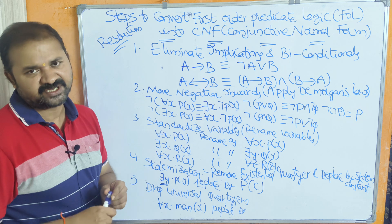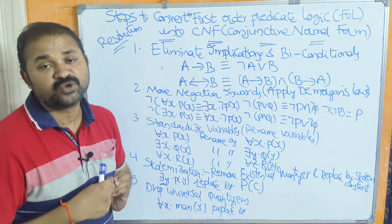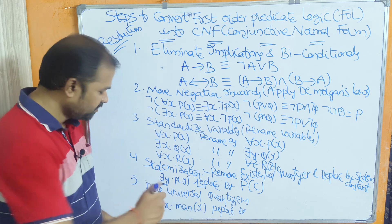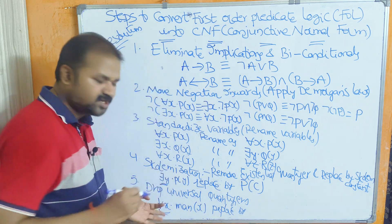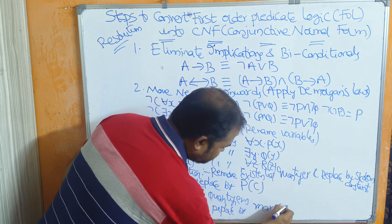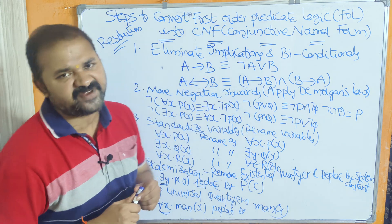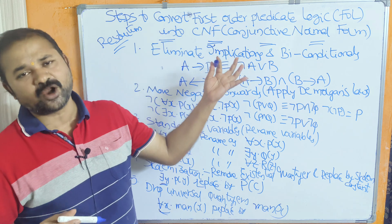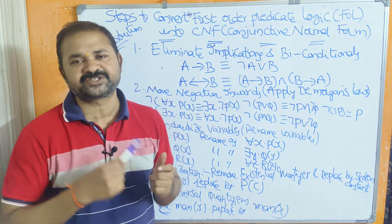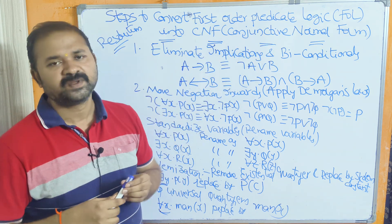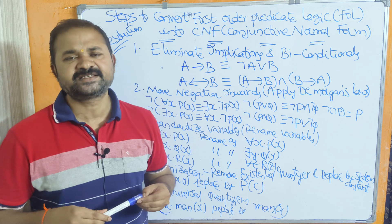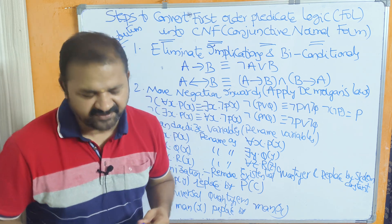Step five: drop universal quantifiers. We remove the universal quantifiers. For example, for all x man(x) — remove the universal quantifier and the statement becomes man(x). In this way we can convert predicate logic, also called first order logic statements, into conjunctive normal form. Please like the video, subscribe to the channel, and share with your friends. Thanks for watching.